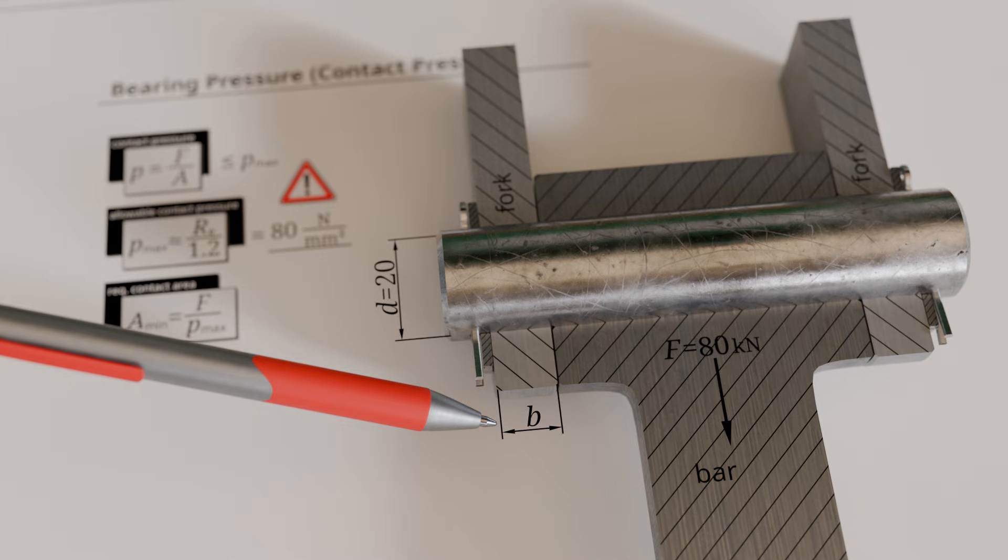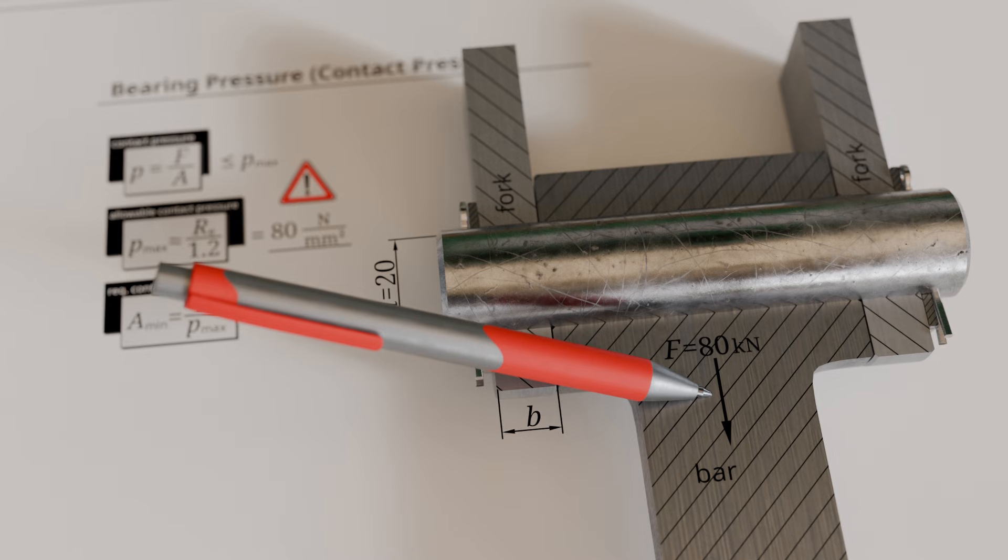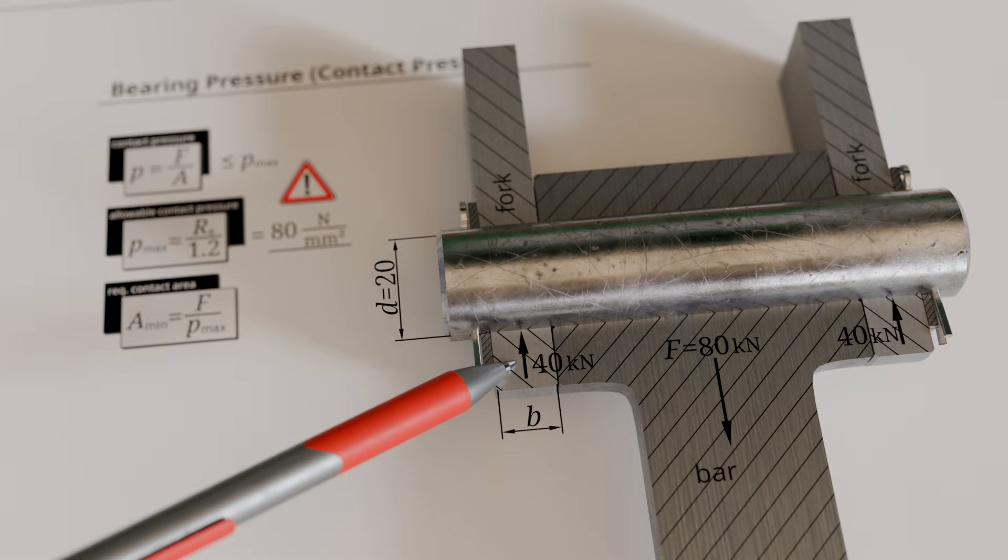First, we determine the minimum required contact area based on the force with which the pin is pressed into the clevis. It must be considered that although the rod exerts a downward force of 80 kilonewtons on the pin, this force is shared equally between the two sides of the clevis. One side of the clevis therefore loads the pin with 40 kilonewtons.